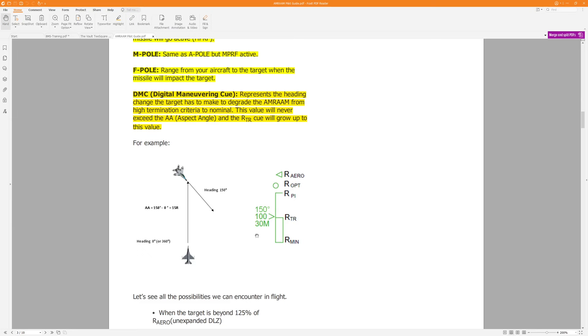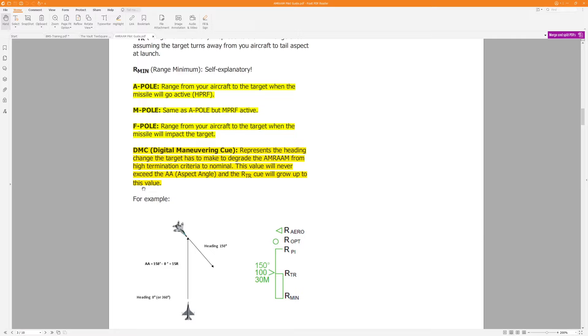Your likelihood of killing the bandit based on when, how close you are to the bandit when you launch. It talks about the A pole, M pole, F pole, etc.